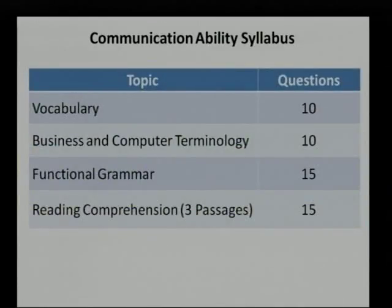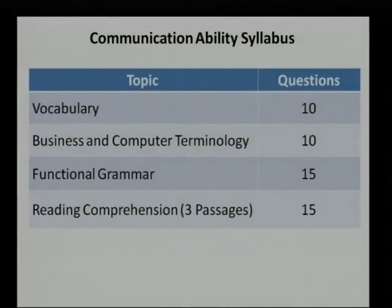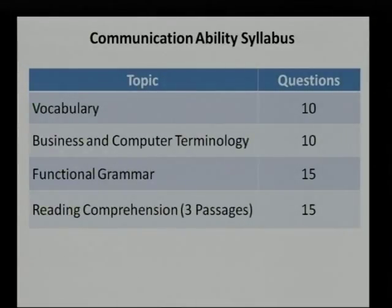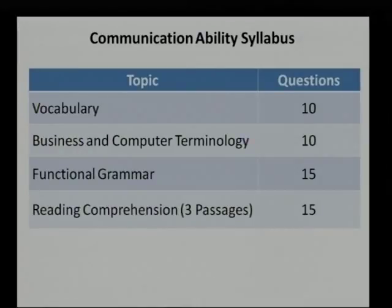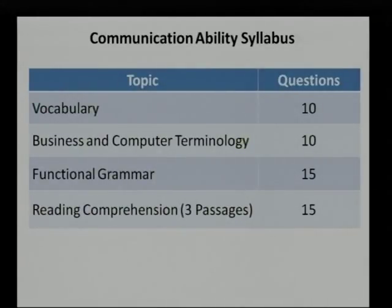For communication ability, the total number of questions is 50: vocabulary has 10 questions, business and computer terminology has 10 questions, functional grammar has 15 questions, and reading comprehension has 3 passages with 5 questions each — that makes 15 questions. We are already done with reading comprehension training; the links are up on YouTube. Right now we are doing functional grammar.